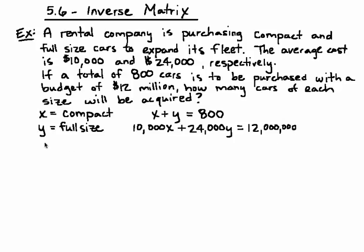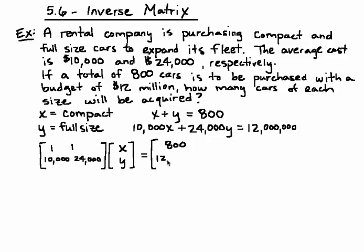And so now we are going to set this up as a matrix equation, Ax equals b. First matrix contains the coefficients of our variables. Second matrix contains the variables, x and y. And the third matrix contains what they are equal to, 800 and 12 million.